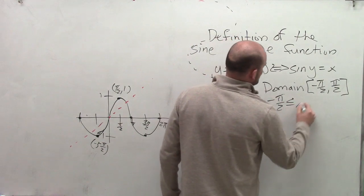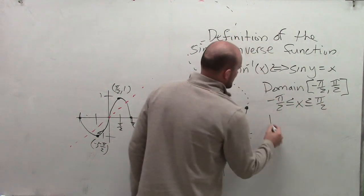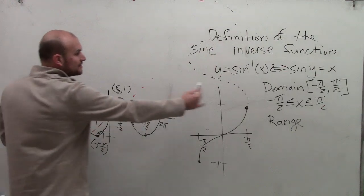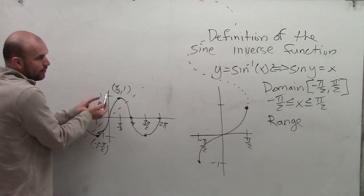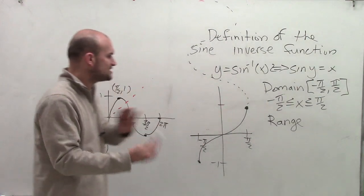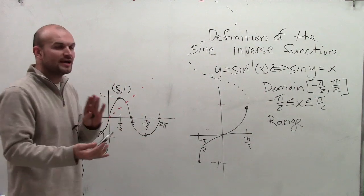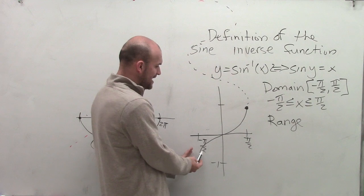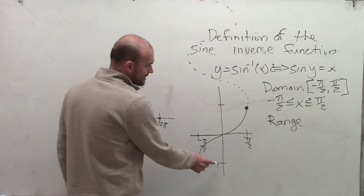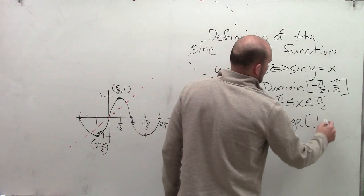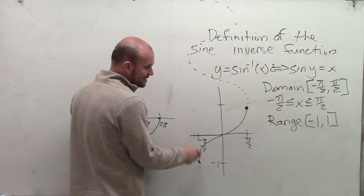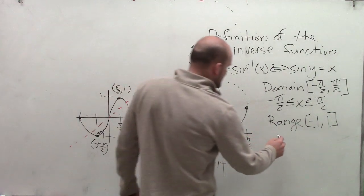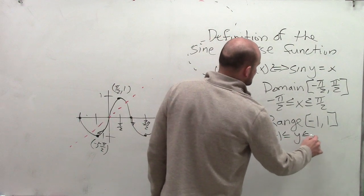We can say negative pi halves is less than or equal to x, which is less than or equal to pi halves. The original sine function had a domain of all real numbers and a range between negative 1 and 1. However, when we swap the graph, even though x and y coordinates swap, the domain and range are now: the domain goes between negative pi halves and pi halves, and the range is between negative 1 and 1. We say negative 1 is less than or equal to y, which is less than or equal to 1, because if the graph continued beyond those values it would fail the vertical line test.